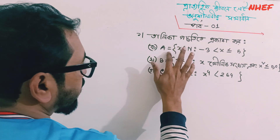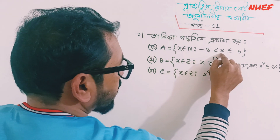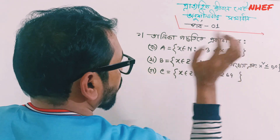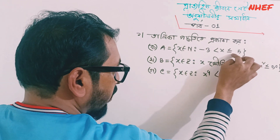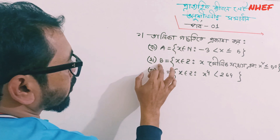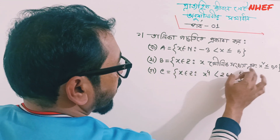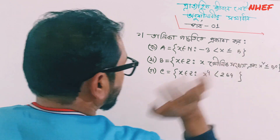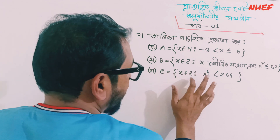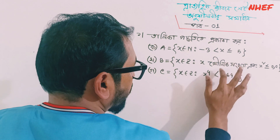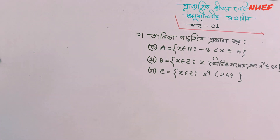We will be able to suggest that A is equal to x belongs to N. So if x is equal to minus 3 is equal to minus 5, we can say that this is equal to 2. B is equal to x belongs to Z, x is equal to x squared less than equal to 50. C is equal to x belongs to Z, x to the power of 4 is less than 24.